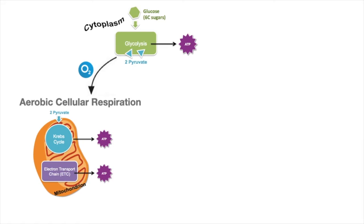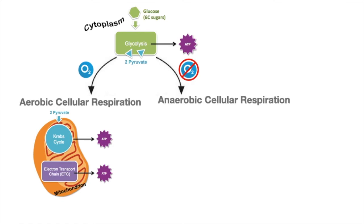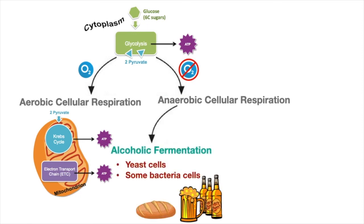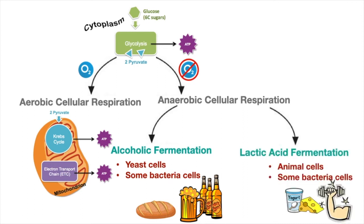To recap: in the presence of oxygen, the pyruvate molecules produced by glycolysis move on to the mitochondria and aerobic cellular respiration. However, in the absence of oxygen or the absence of a working mitochondria, anaerobic respiration takes place. This can in turn take two forms. In yeast and some bacterial cells, the pyruvate undergoes alcoholic fermentation. And in animal cells and some bacterial cells, the pyruvate undergoes lactic acid fermentation.